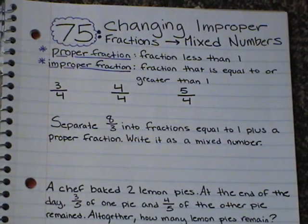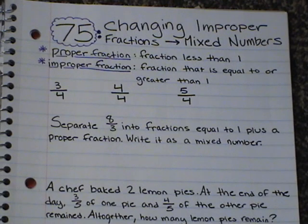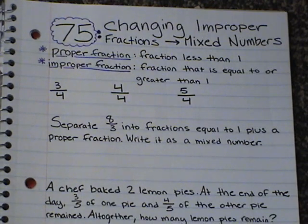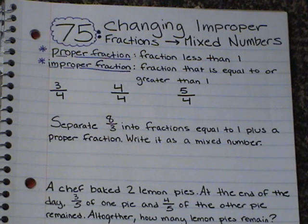A fraction can be less than 1, a fraction could be equal to 1, or a fraction could be greater than 1. A fraction that is less than 1 is called a proper fraction. A fraction is basically a part of something, or a piece of something. So a proper fraction is any fraction that is less than 1 — not all the way there, not one full whole.